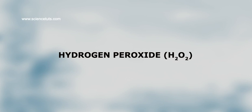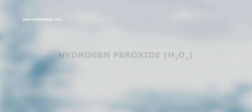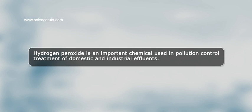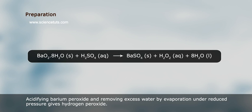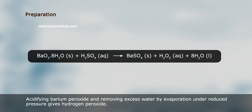Hydrogen peroxide, H₂O₂, is an important chemical used in pollution control and treatment of domestic and industrial effluents. It can be prepared by acidifying barium peroxide and removing excess water by evaporation under reduced pressure: BaO₂·8H₂O (solid) + H₂SO₄ (aqueous) gives BaSO₄ (solid) + H₂O₂ (aqueous) + 8H₂O.